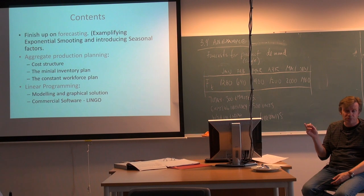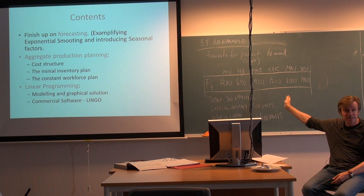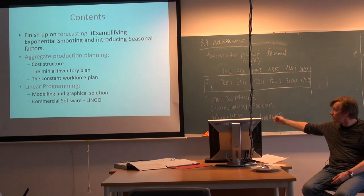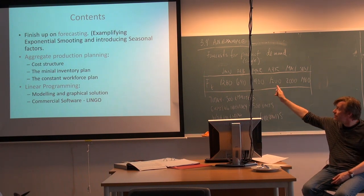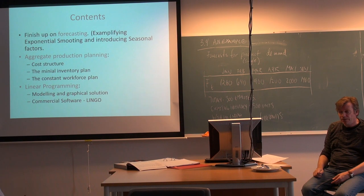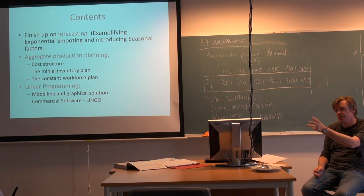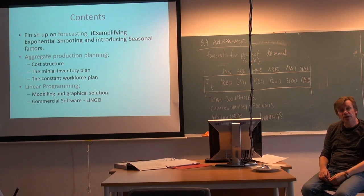We have a fair amount available when we start planning and want a similar amount — 100 units higher — when we finish. But we're still missing costs: how much things cost, what it costs to hire and fire, possibly subcontracting and so on. All these cost elements must have numbers put on them to finish this example.